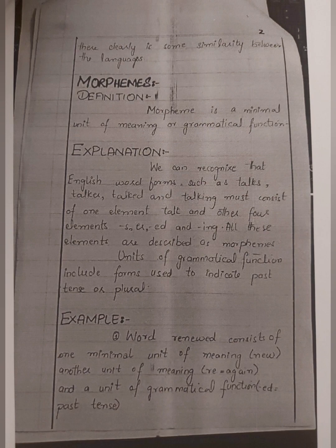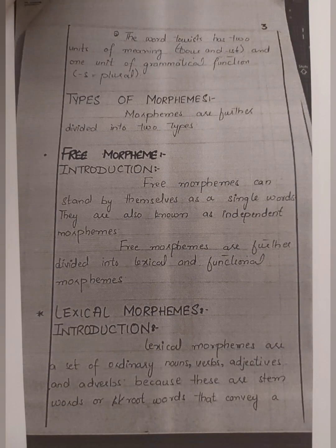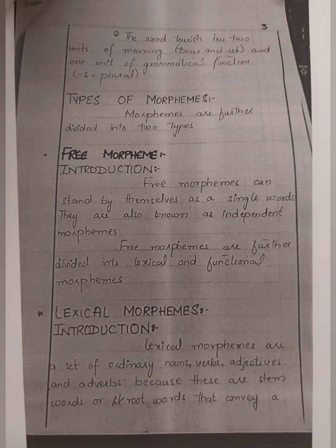My basic word example is 'renewed'. It consists of one stem word — 'new' — then 're' is a prefix, and 'ed' gives us the past tense. So 'ed' gives us the past tense, which we call a derivational morpheme. Another example is 'tourists': 'tour' is the stem word, then 'ist' is another unit of grammatical function, and 's' at the end is the inflectional morpheme. So 'ist' and 's' have different grammatical functions but both come under the bound morpheme, because you cannot write 'ist' or 's' independently — they must be attached to a stem word.